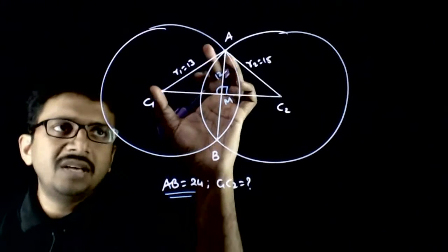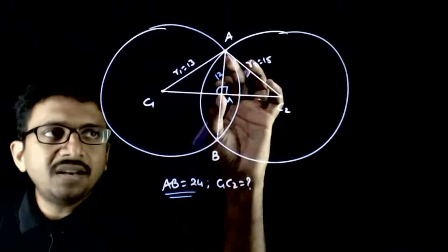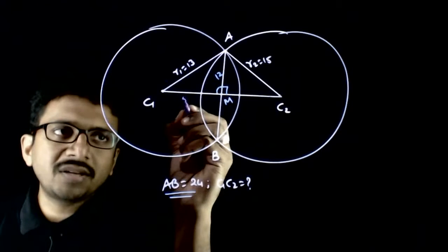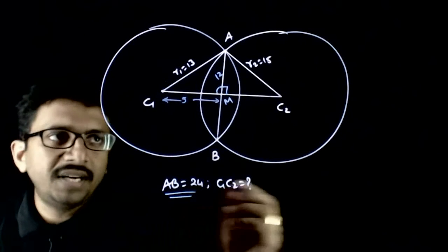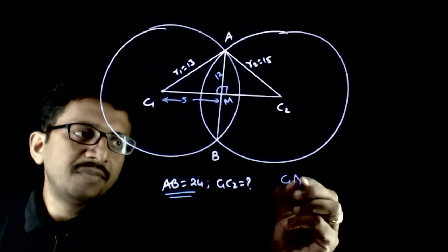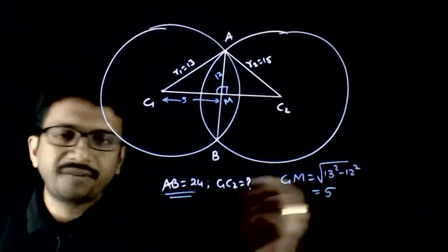By Pythagoras theorem. Hypotenuse is 13, one side is 12. So by Pythagoras theorem, the other side will be equal to 5. That is, C1M will be equal to root of 13 square minus 12 square, which is equal to 5.